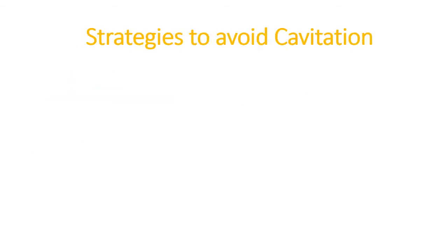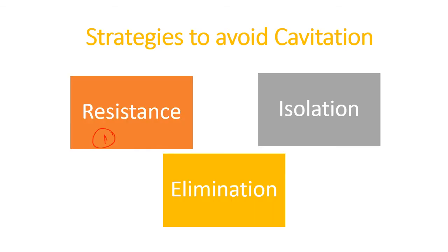There are mainly three strategies to avoid cavitation: number one is resistance, number two is isolation, and number three is elimination. This framework makes it easier to understand and conceptualize the different approaches. These strategies can also be used in combination — resistance and isolation, resistance and elimination, or all three together — to provide an effective solution for avoiding cavitation.